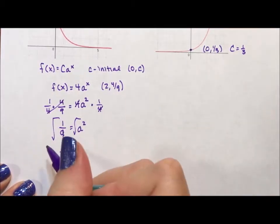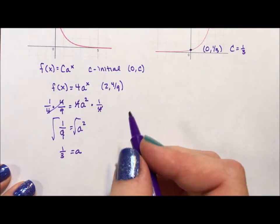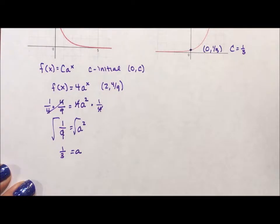Normally I would say this has to be a plus or minus, but a has to be positive. It's one of the rules—a has to be positive. So we have f(x) = 4(1/3)^x.